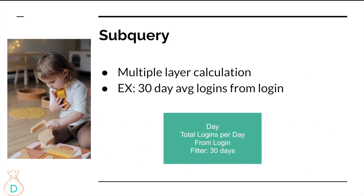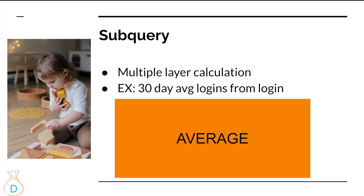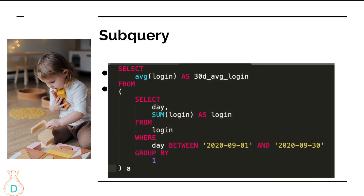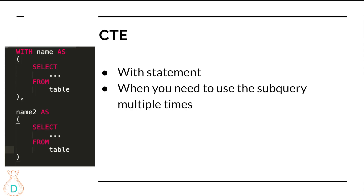Subqueries are like playing Lego — you have smaller pieces inside supporting the bigger piece. They mainly help with multiple layers of calculation. An example is calculating a 30-day average of logins. Your subquery aggregates total logins per day filtered to the last 30 days, and then the outer query calculates the average of that total. In SQL, you select the date, and in parentheses is the subquery summing logins from the logins table where the date is in the last 30 days, then take the average of that.